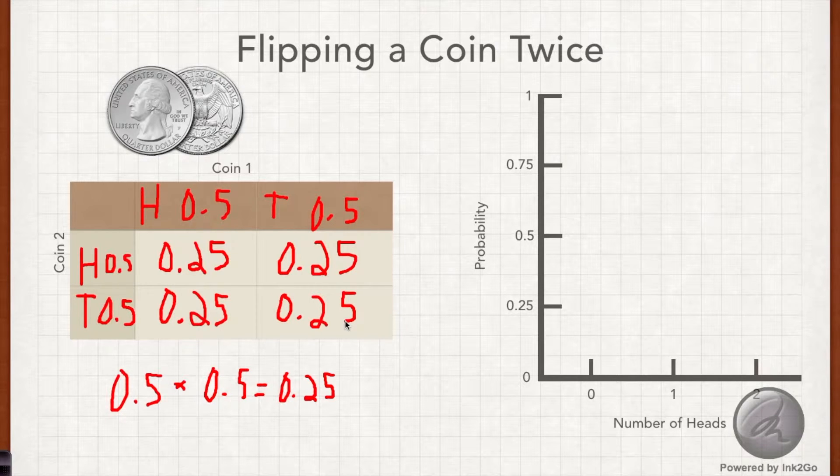Great, so let's fill in our graph. So how could I get zero heads? I could do that by getting tails on the first coin and tails on the second coin, and that's the only way. So the probability of that is 0.25, or 25%. So I'll fill in my bar chart.